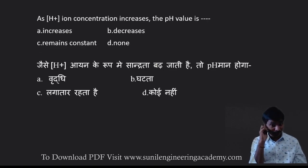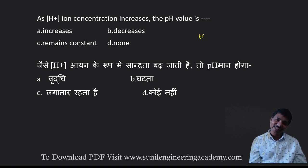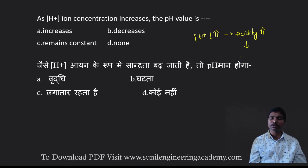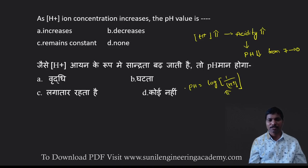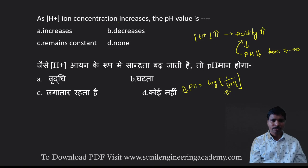As H⁺ ion concentration increases, acidity increases — meaning pH becomes very near to zero, so pH value decreases from 7 to 0. The formula is: pH = −log[H⁺] or log(1/[H⁺]), meaning pH is inversely proportional to H⁺ concentration. As H⁺ ion concentration increases, pH decreases — acidity increases. Answer is option B.